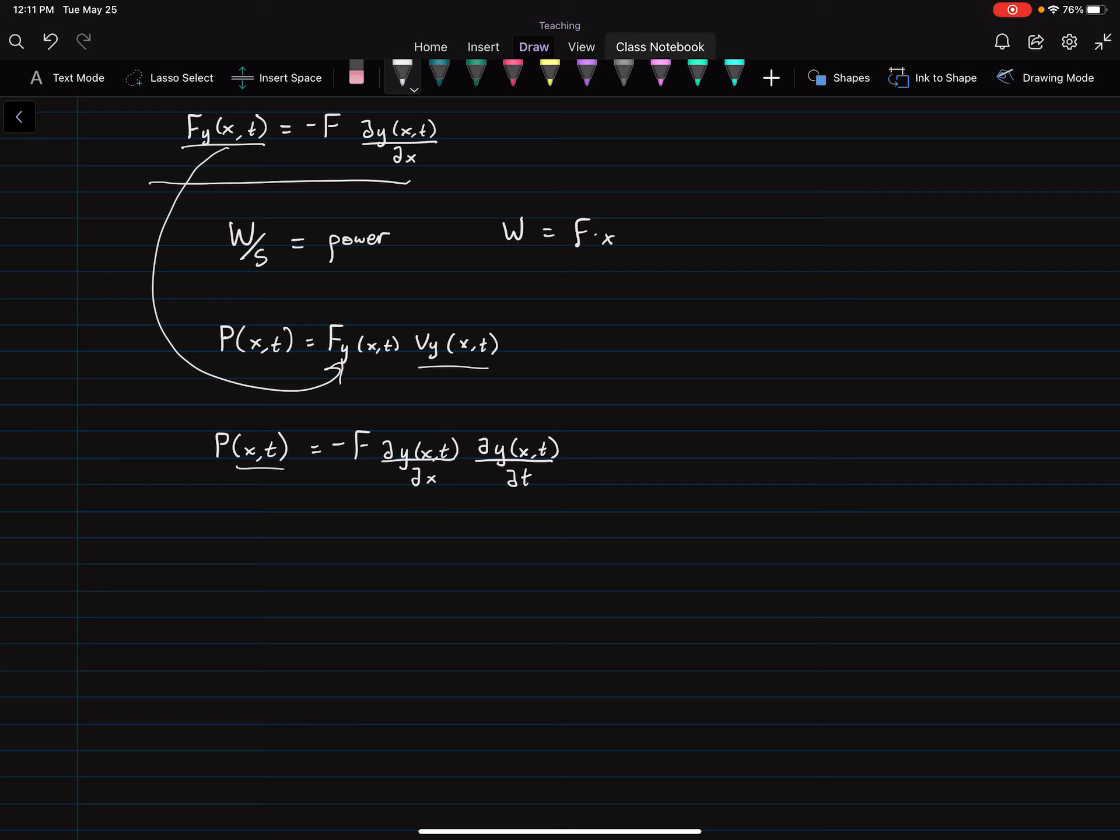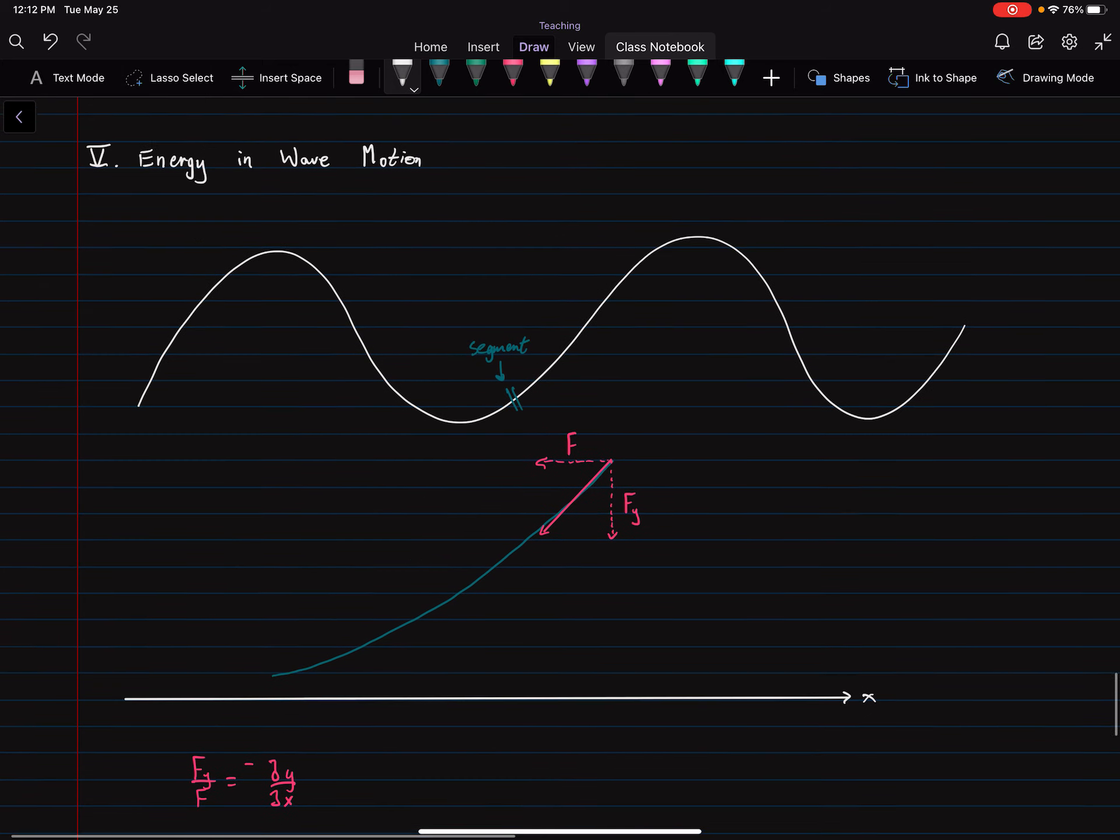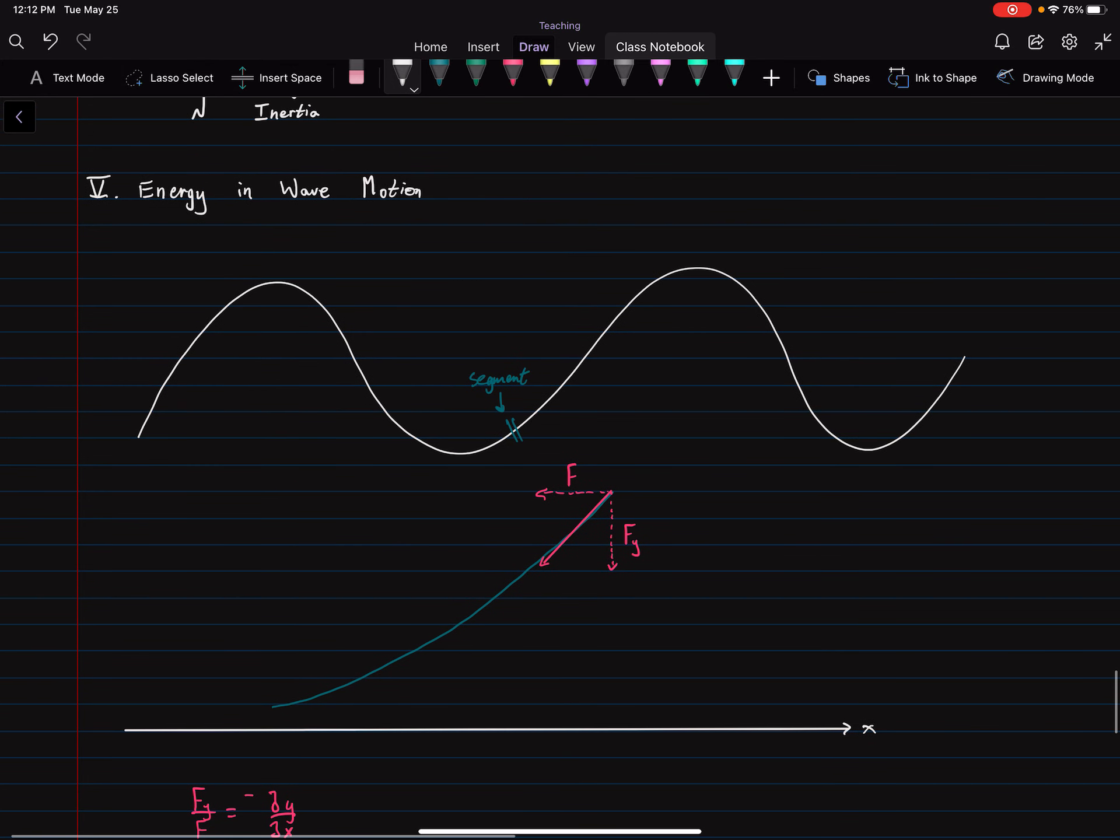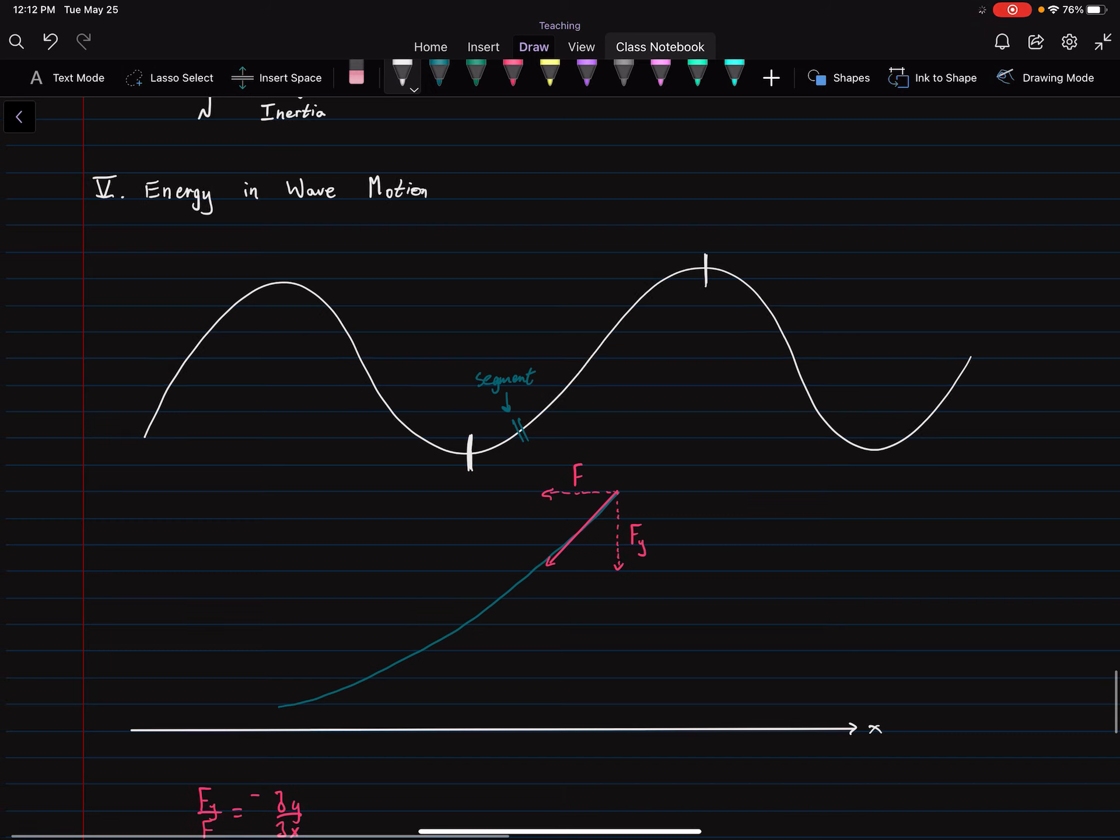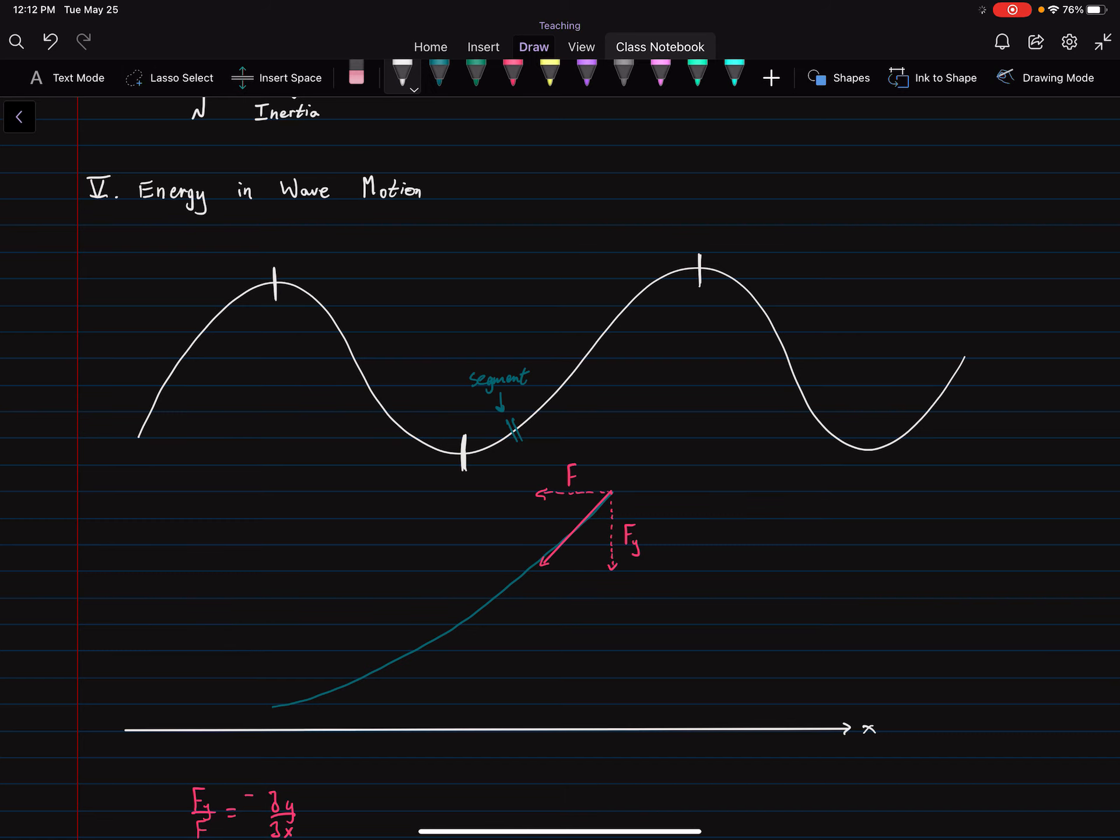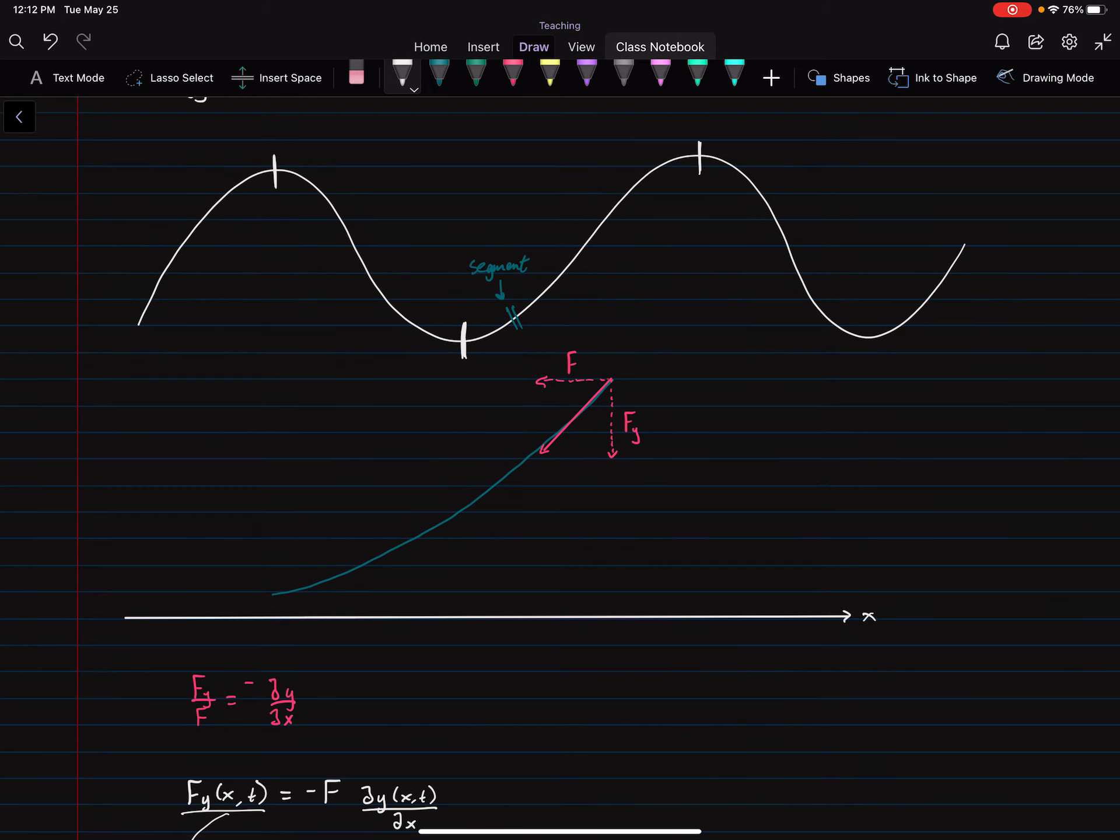So if we look at this a little closer, you can prove to yourself that energy is only transferred at the points where the slope of the string is non-zero. So no energy is being transported at these points here. Why is that? Well, think about it. If we were to look at segments here, just short little segments, and do the exact same analysis that we did, that segment would be flat.